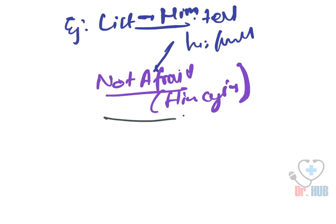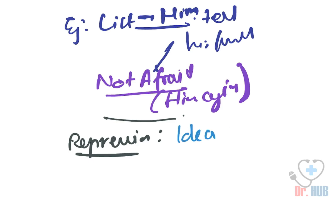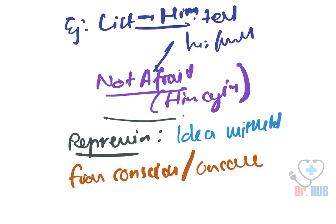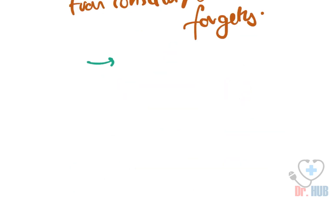Next is repression. Repression is when an idea or feeling is withheld from consciousness — unconscious forgetting. An example is 'I do not remember having a cat.' This is an example of repression.